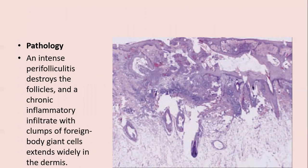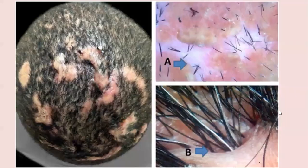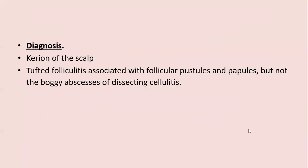The earliest lesions are firm, tender nodules; hairs overlying the nodules are soon shed and easily extracted, and follicular openings discharge pus. Nodules form roughly cerebriform ridges devoid of hairs on the summit but still hairy in the clefts — hence the name 'abscedens et suffodiens.' Nodules persist for years before eventually healing to leave irregular, possibly keloidal scarring; fatal squamous cell carcinoma may also develop. Differential diagnoses include kerion of the scalp and tufted folliculitis.